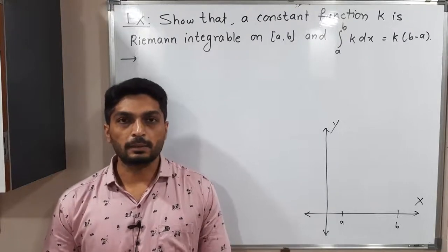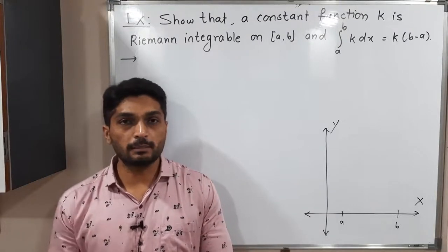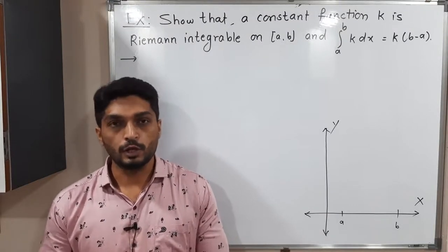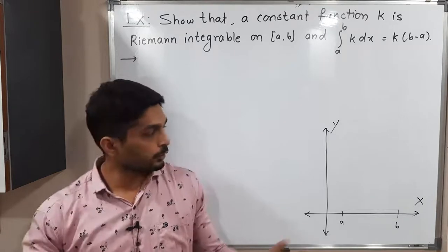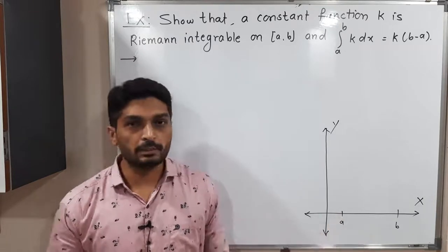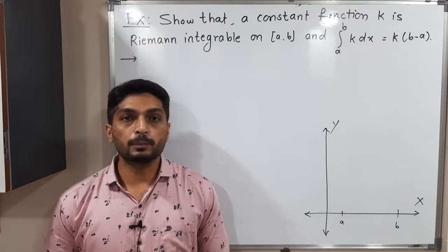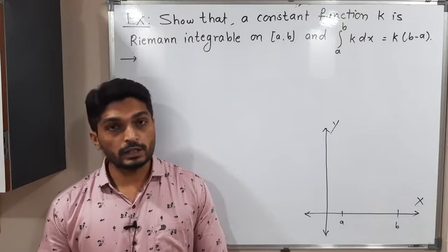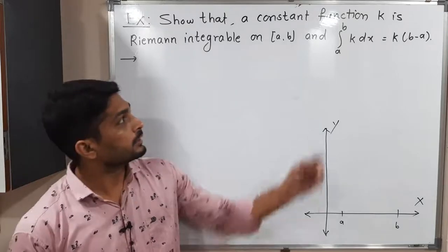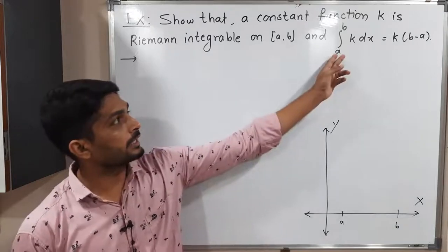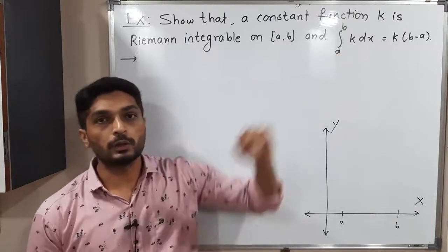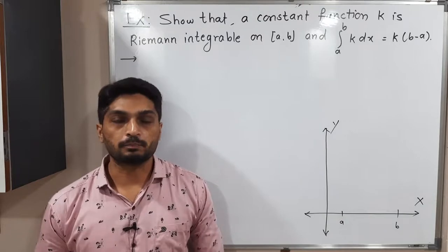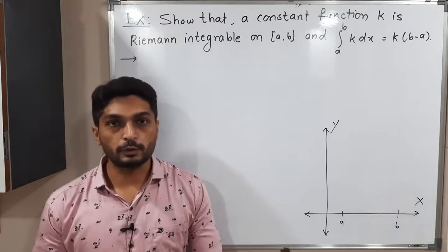Let us discuss this example. We have a constant function defined on closed interval [a, b] and we have to prove that the function is Riemann integrable, as well as prove that the value of that integration is equal to k times (b minus a). So let us start to prove.